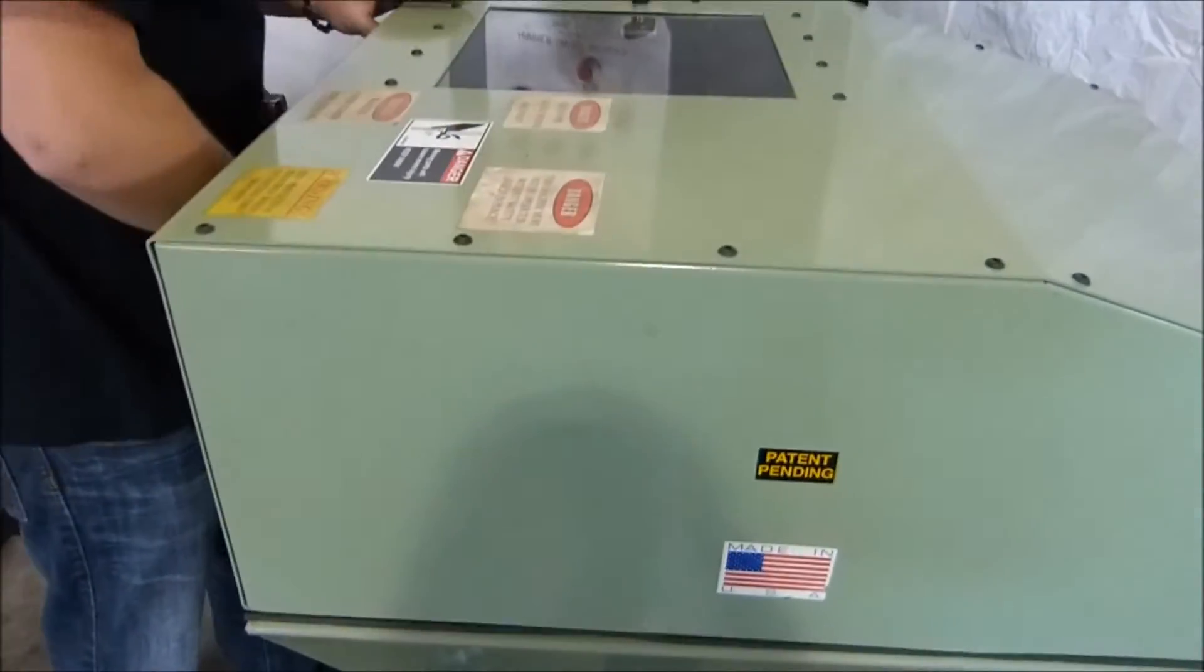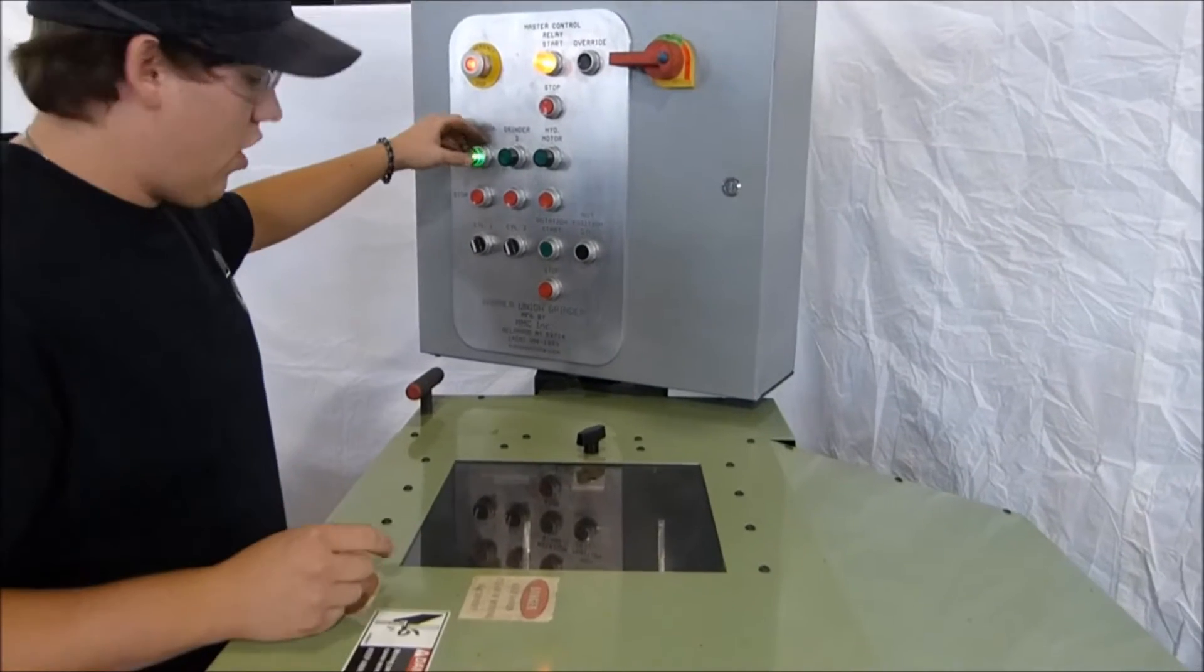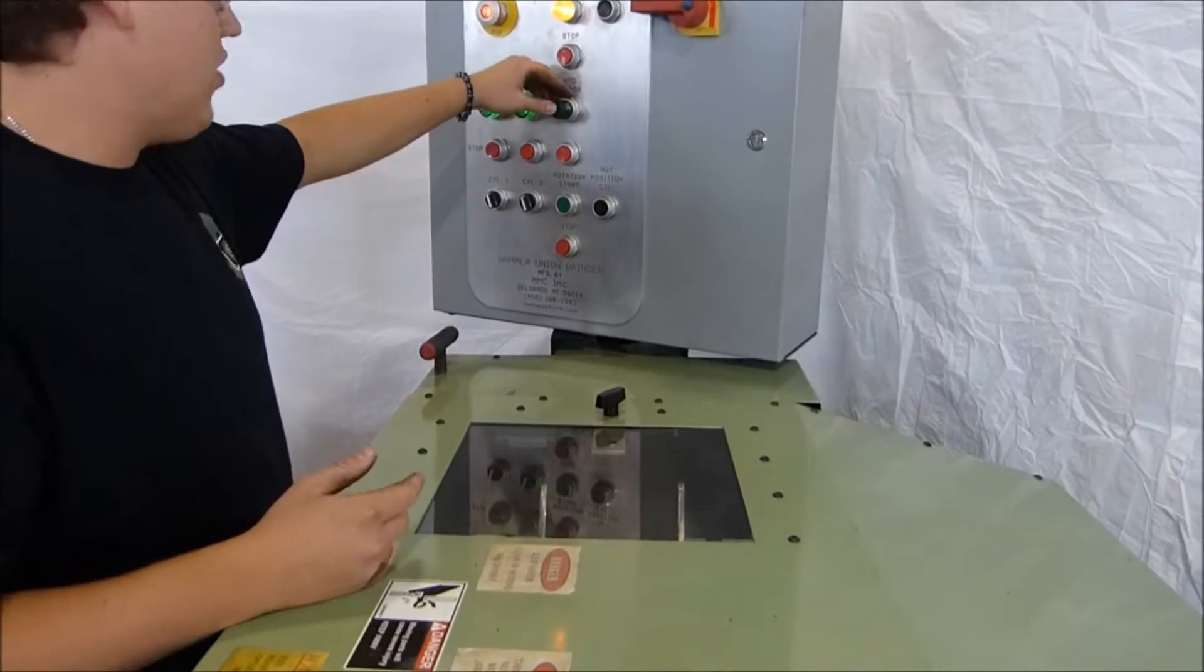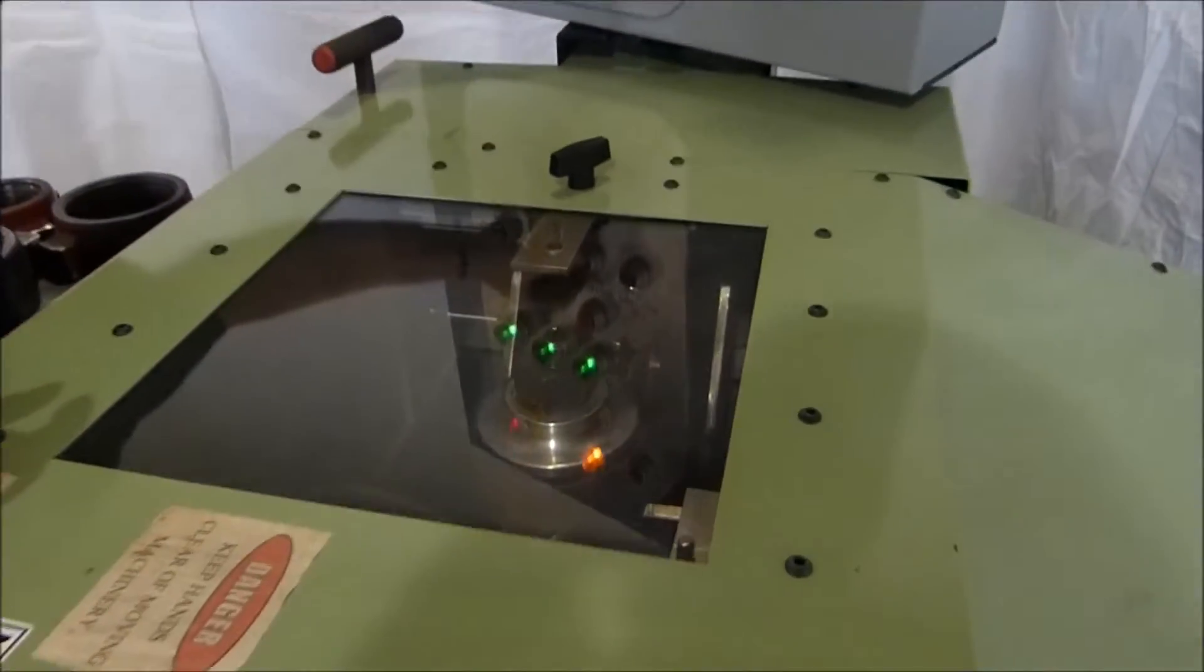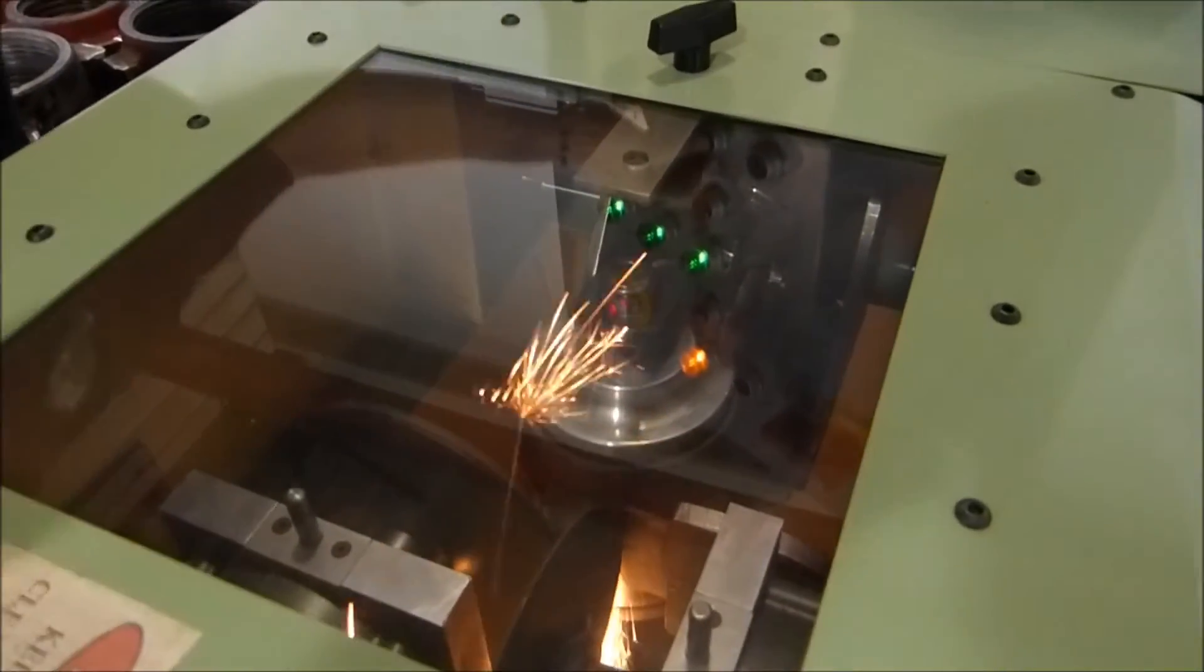We'll close the hood, turn the power on, turn on the first grinder, the second grinder, and then the hydraulic motor. We'll bring both grinders in. Once they're engaged, we'll start the rotation.